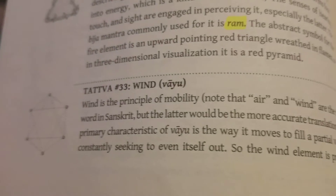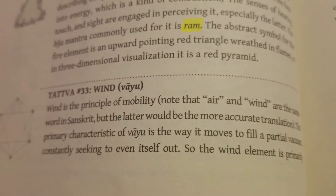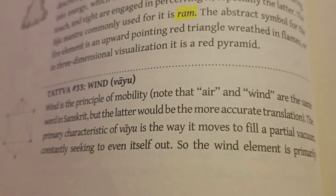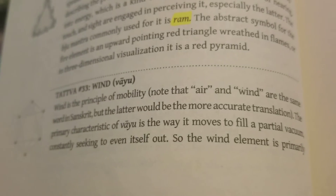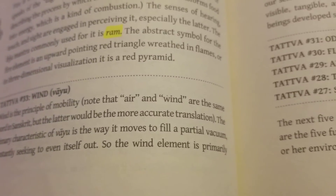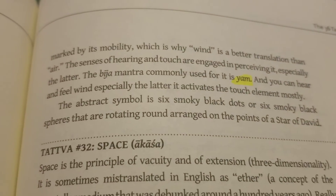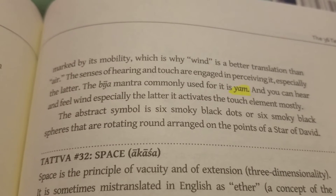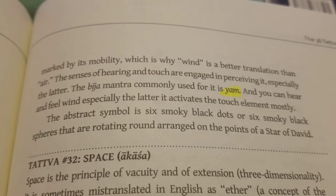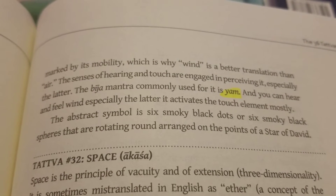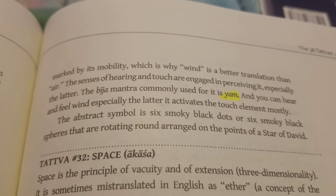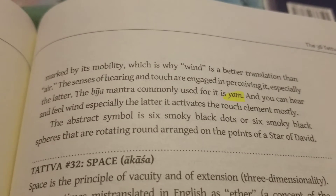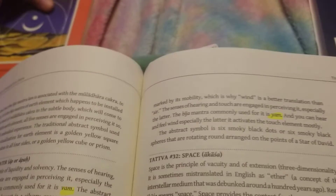Then we move on to Vayu, the wind. Wind is the principle of mobility. Note that air and wind are the same word in Sanskrit, but the latter would be a more accurate translation. The primary characteristic of Vayu is the way it moves to fill a partial vacuum, constantly seeking to even itself out, so the wind element is primarily marked by its mobility, which is why wind is a better translation than air. The senses of hearing and touch are engaged in perceiving it, especially touch — you can hear and feel the wind, and it activates the touch element mostly. The abstract symbol is six smoky black dots or spheres rotating around, angled at the points of the Star of David — the hexagram. The beej mantra commonly used for it is YAM.